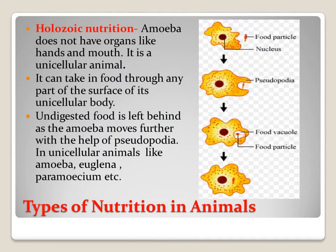Let us learn types of nutrition in animals. The first is holozoic nutrition. Amoeba does not have organs like hands and a mouth — it is a unicellular animal that can take in food through any part of its cell surface. It surrounds the food particle from all sides to take it into the cell, then digests the food with the help of different enzymes.